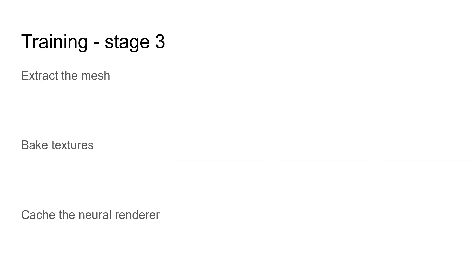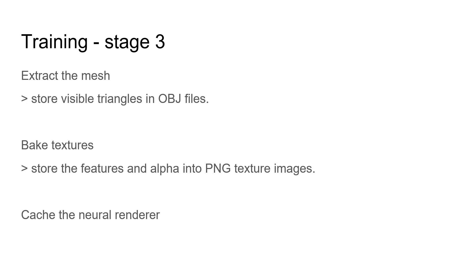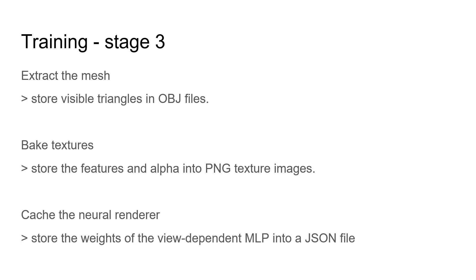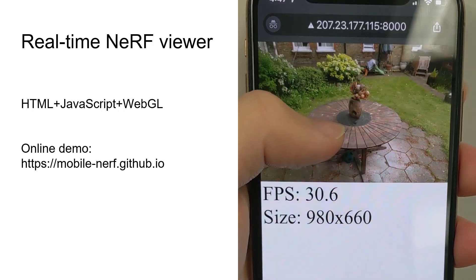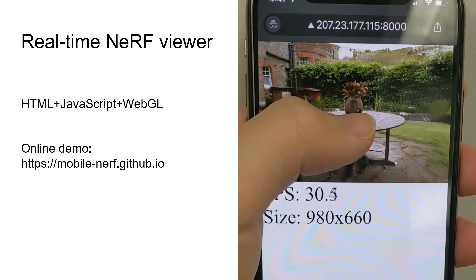After the second training stage, we can now export the NeRF scene. We extract the mesh by storing visible triangles in OBJ files, bake textures by storing the features and alpha into PNG texture images, and cache the neural renderer by storing the weights of the view-dependent MLP in a JSON file. These are all we need to view our NeRF scenes in real-time. Our NeRF viewer is a simple WebGL application, and a live demo is available on our project page.